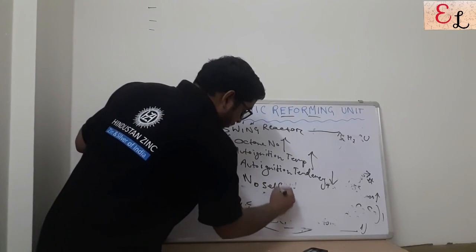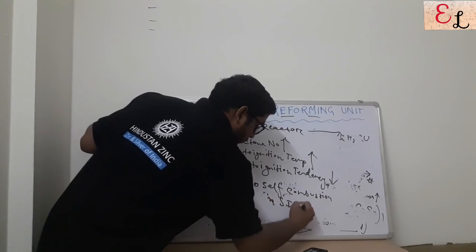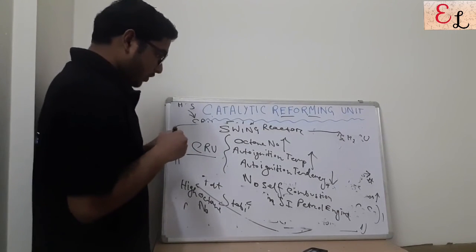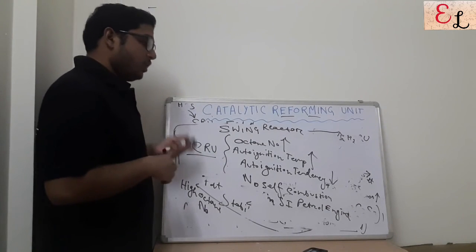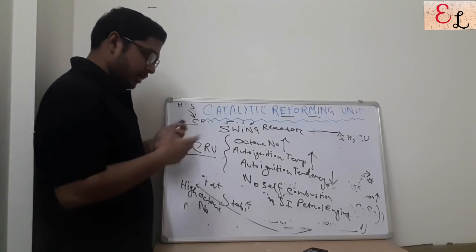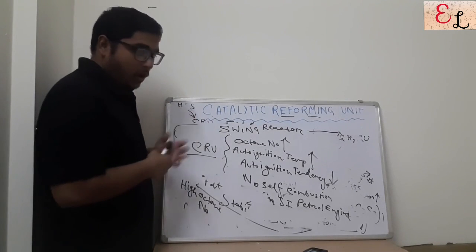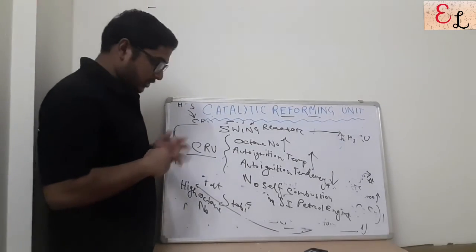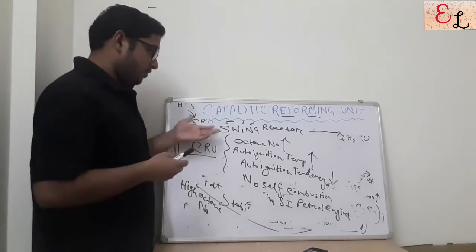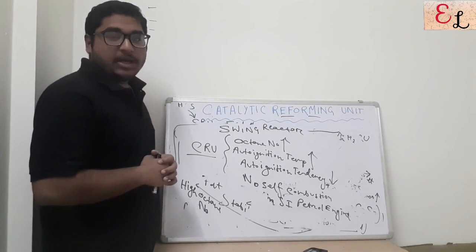The purpose of the CRU is to ensure no self-combustion takes place in spark ignition petrol engines. The CRU increases octane number and increases auto-ignition temperature so that auto-ignition tendency is decreased. For a clearer idea of what happens in knocking and auto-ignition, refer to the knocking video or the petrol engine versus diesel engine video. I think I have made clear what CRU is, what it's all about, why and how it is used, the entire structure of the CRU system, what the stabilizer is, and why octane number requirements are high. Like, share, and subscribe. Thank you.